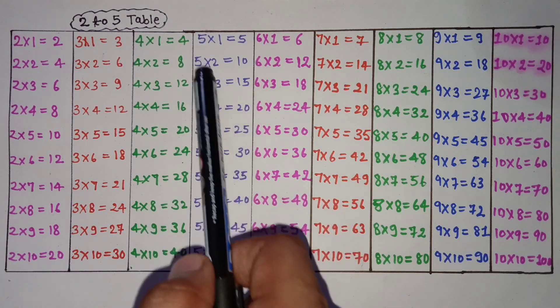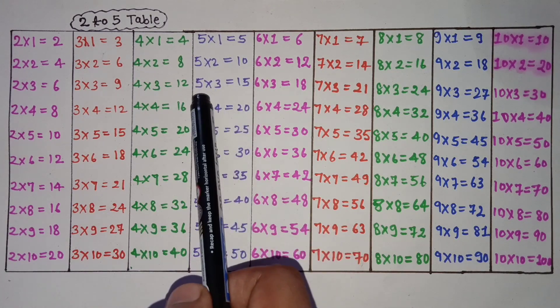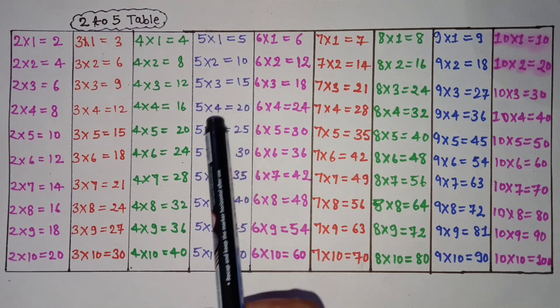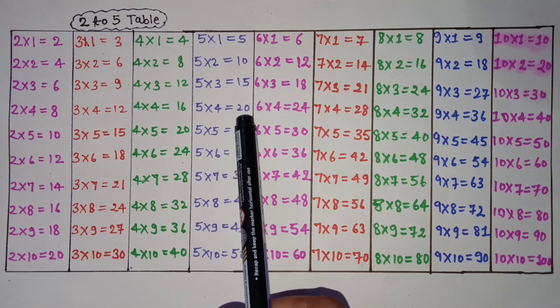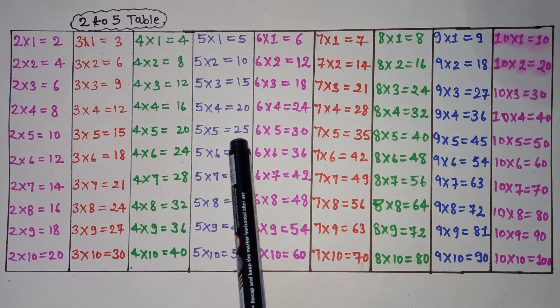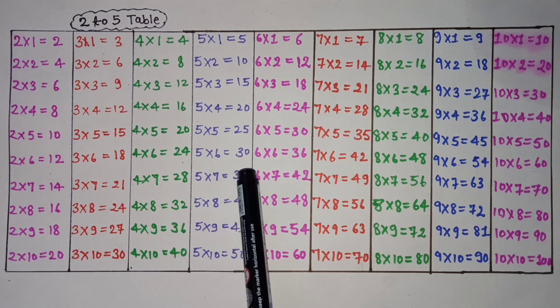5 2 is 10, 5 3 is 15, 5 4 is 20, 5 5 is 25, 5 6 is 30.